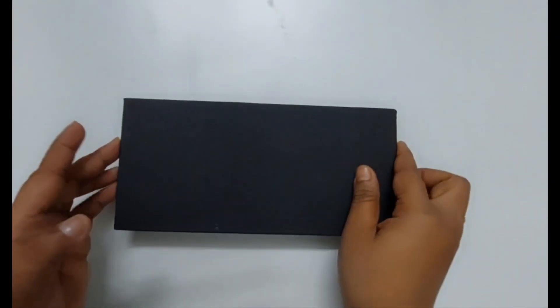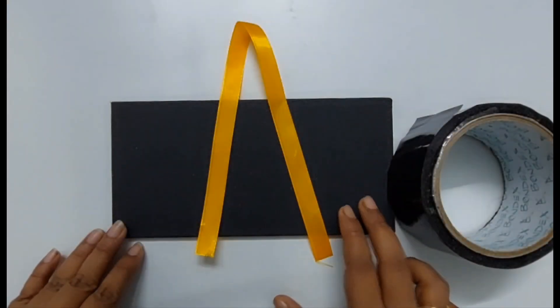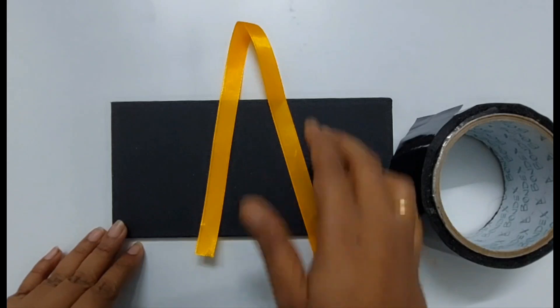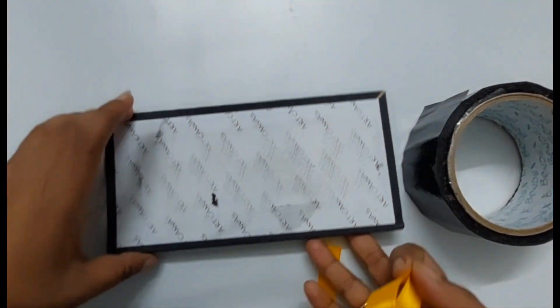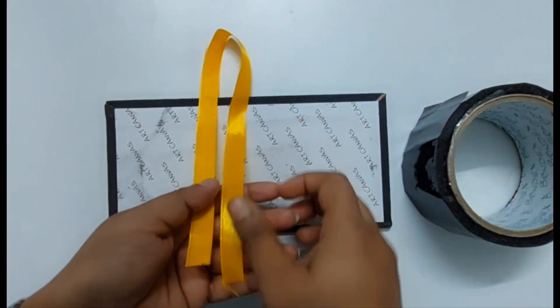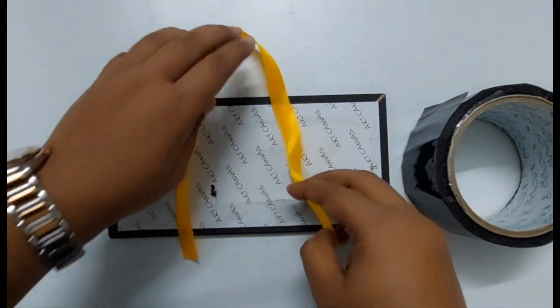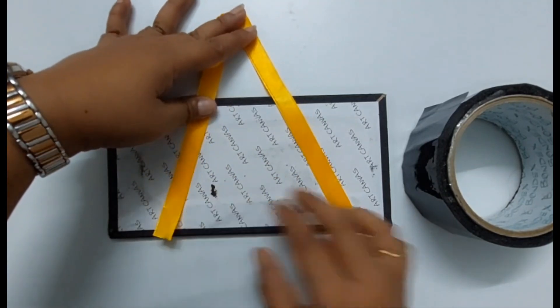So this is a canvas board and I will use this for making my key holder. First of all, I'm going to take this canvas board and this ribbon, and I will just put the ribbon here like this using cello tape.